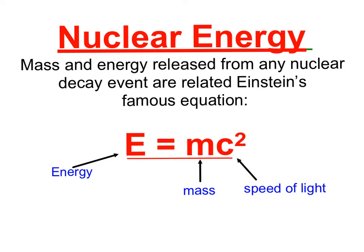All the energy released in nuclear reactions can be calculated using Einstein's equation, E equals mc squared. We will not actually be using this to calculate energy, but understand that we're talking about a huge scale here — orders of magnitude more than any chemical reaction would release.